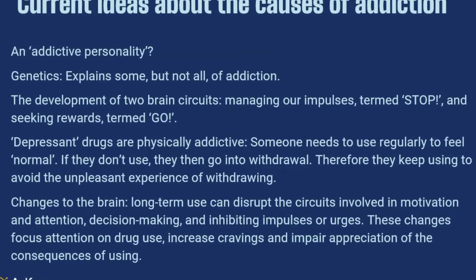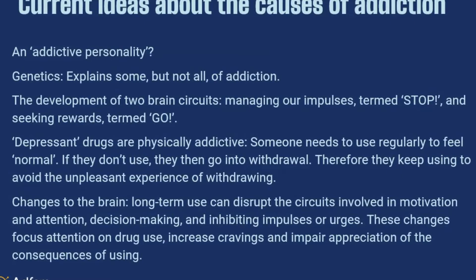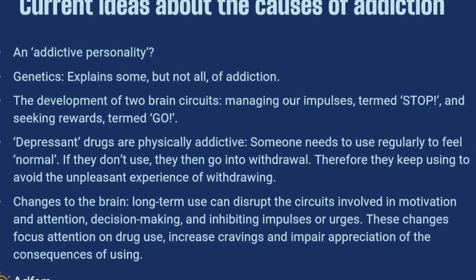The next idea concerns the development of two circuits in the brain, which is particularly important for the start of addiction. One circuit can be termed 'stop', which is the one we use to manage our impulses, and the other can be termed 'go', which seeks rewards. During our teenage years and early twenties, the go circuit comes online and is fully formed, but the stop circuit hasn't fully matured until well into our twenties. This period of development is critical for substance use in that someone's experimentation may become more frequent and prolonged, and a vulnerability to beginning addiction can start at this key time.